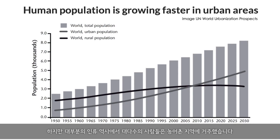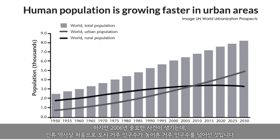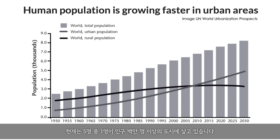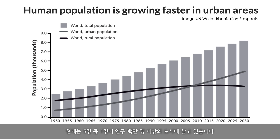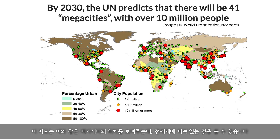But for most of human history, most people lived in rural areas. This graph shows the total human population, with the green line representing the number of people in urban areas and the black line representing the number in rural areas. We passed an important landmark in 2006 when, for the first time in human history, more people lived in urban areas than rural ones. Right now, one out of five of us lives in a city of over a million people. By 2030, the UN predicts there will be 41 cities with over 10 million people — so-called mega cities — spread throughout the world.